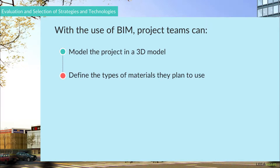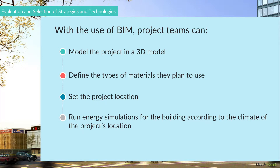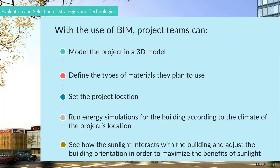Project teams can define the types of materials they plan to use, set the project location, and run energy simulations for the building according to the climate of the project's location. Alternatively, the project teams can see how the sunlight interacts with the building and adjust the building orientation in order to maximize the benefits of sunlight.